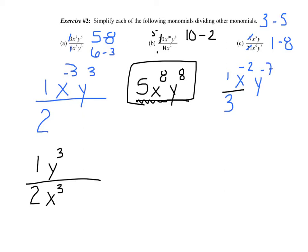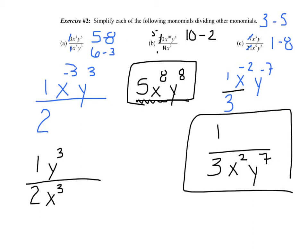Now remember, just play the game. If you have a negative exponent, we're going to shoot you downstairs. So I've got a one-third. I'm going to move the x squared down and the y to the seventh down. And there you have it. Hopefully that answer matched yours.